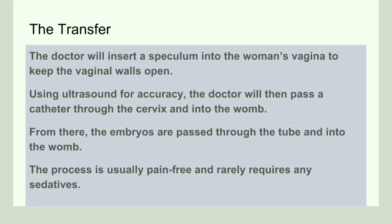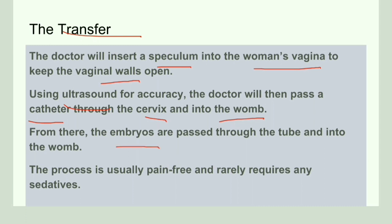The next step is the transfer of the embryo. Doctors first insert a speculum into the woman's vagina to open the vaginal wall. Then, using an ultrasound, they pass a catheter through the cervix into the womb. It is through this catheter that they transfer the embryo into the womb. A catheter is a flexible tube that can be easily inserted, and this transfer process is pain free.